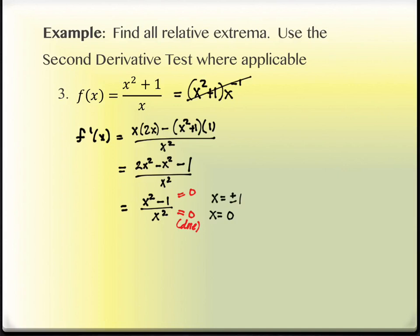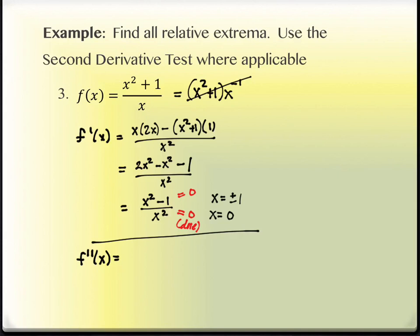If we did the first derivative test, we'd use these three values, set up a sign chart, and test intervals — but that's not the second derivative test. The second derivative test says we take a second derivative instead of doing a sign chart. So we take the second derivative of (x squared minus 1) over x squared using the quotient rule again: low d high — x squared times 2x — minus high (x squared minus 1) times d low (2x), all over the denominator squared, which gives x to the fourth.